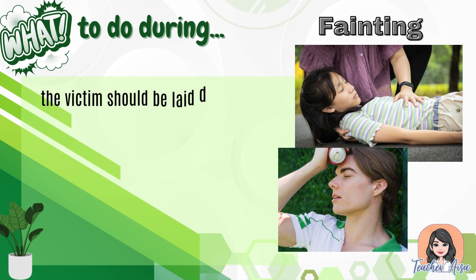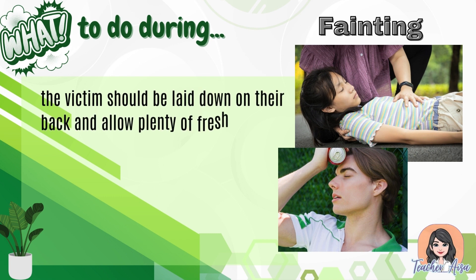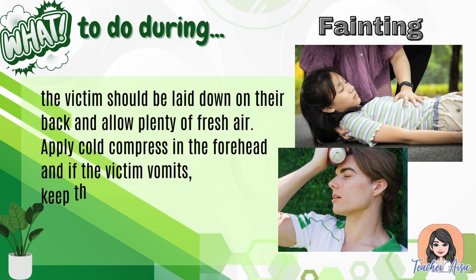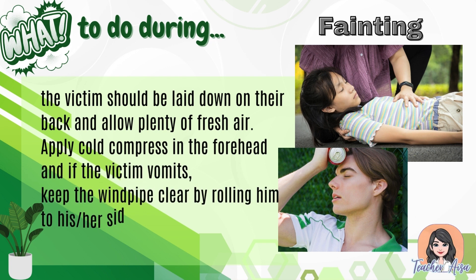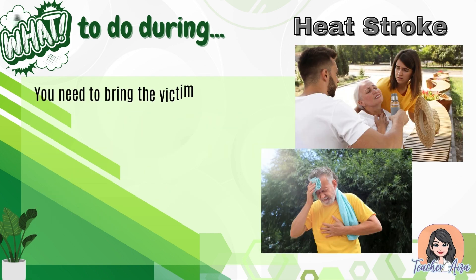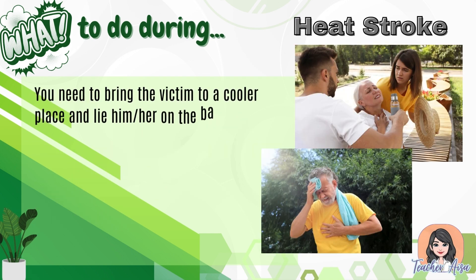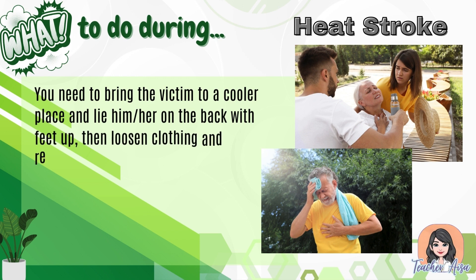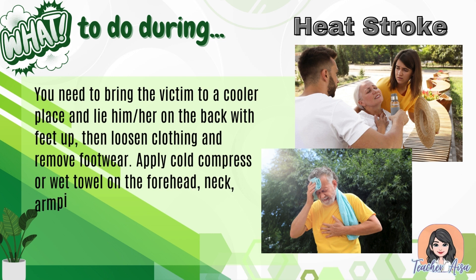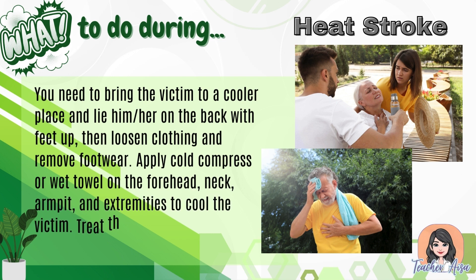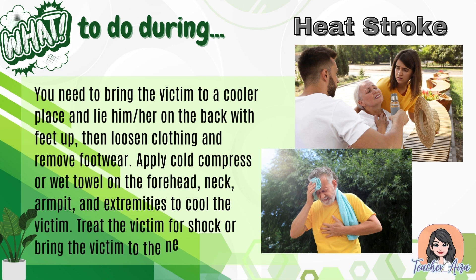What to do during fainting: lay the victim on their back, allow plenty of fresh air, apply cold compress on the forehead, and if the victim vomits, keep the windpipe clear by rolling them to their side. What to do during heat stroke: bring the victim to a cooler place, lie them on their back with feet up, loosen clothing and remove footwear, apply cold compress or wet towel on the forehead, neck, armpit, and extremities, treat for shock, or bring the victim to the nearest hospital.